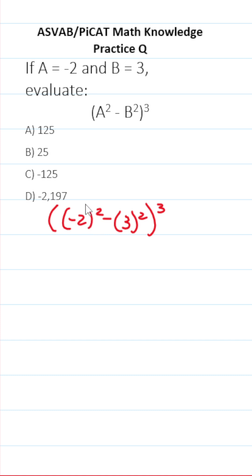According to the order of operations, we work out what's in parentheses first. So negative 2 squared - negative 2 squared is the same thing as negative 2 times negative 2. Negative times a negative is a positive, so this becomes 4 minus.